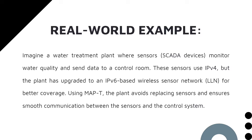For example, if you use sensors, you will be able to monitor the quality of water. If data is generated, you will send it to the control room. We use IPv4 sensors. For example, we use a water treatment plant and upgrade it to IPv6-based wireless sensors for LLN, for better coverage. You can use the existing SCADA device operating on IPv4, and then use MAP-T to bridge the sensors. We ensure smooth communication between the sensors and the control system.